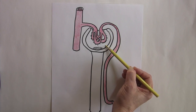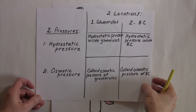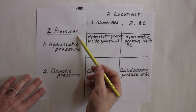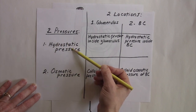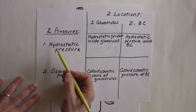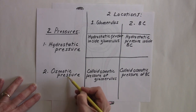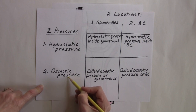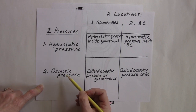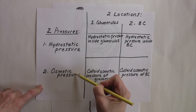When you use the word 'net,' you can tell there's more than one pressure to consider. Looking at this chart, there are two types of pressure: hydrostatic pressure — like blood pressure or water pressure, the fluid pressure inside a region — and osmotic pressure, which is a force exerted by a concentrated solution that attracts water from a more dilute solution. These are the two pressures taken into consideration for the net filtration pressure.